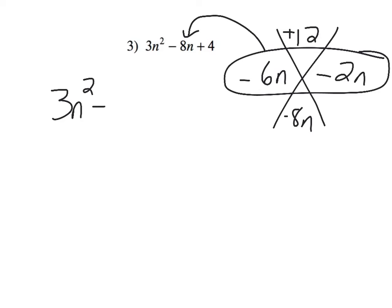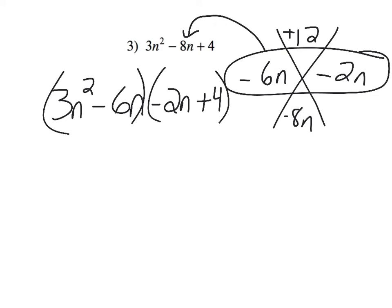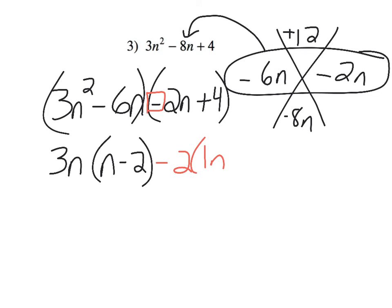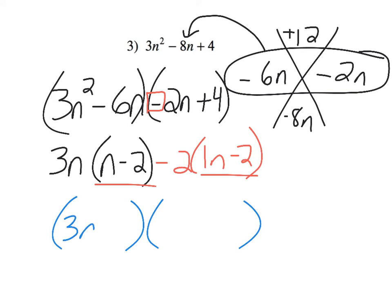So, we have three n squared minus six n minus two n plus four. Let's see what we can take out. Three and six — I can divide by three. n squared and n — I can take out one n. So, I'd be left with n minus two. This sign needs to come out, so I'm going to take out a negative, and I can take out two. Negative two divided by negative two is positive one n. Four divided by negative two is negative two. And you'll see these match. So, my final answer is three n minus two times n minus two.